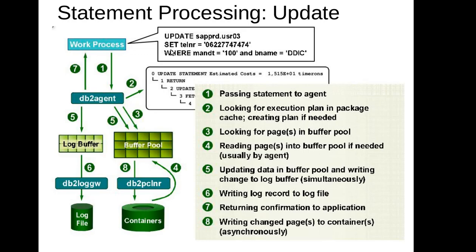Now what happens when we do an UPDATE? Imagine a user wants to update one particular row depending on a particular condition. Again, the work process gives the request to the DB2 agent. The DB2 agent looks at the execution plan in the package cache — if it's there, fine; if not, it creates the plan. It looks for the page in the buffer pool; if it's not there, it reads the pages from the container into the buffer pool. The major part is updating the record — when you give the update command, it will be written in parallel to both the log buffer and the buffer pool.